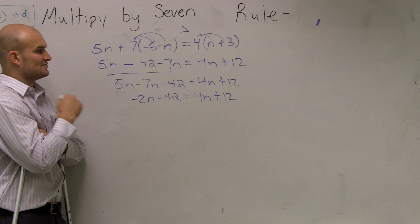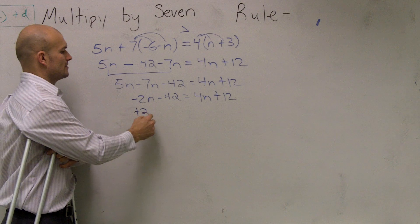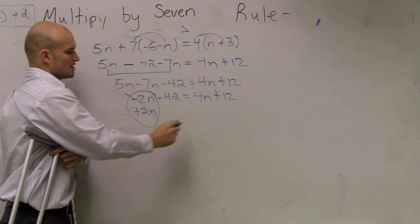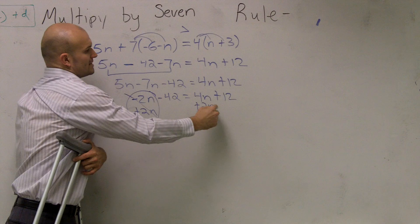So here, if I want to get rid of a negative 2N, I have to add 2N. So I'm going to get rid of it on the left side because that's going to go to 0. So I add a 2N to this side.